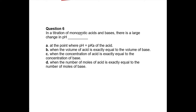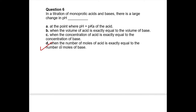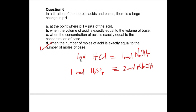You reach the equivalence point when you have molar equivalent amounts of acid and base. Because both are monoprotic, you need the moles to be the same. Concentrations being equal doesn't guarantee equal moles if volumes differ. The answer is D: the number of moles of acid equals the number of moles of base. Molar equivalence means the amounts that exactly neutralize each other — for example, one mole of H2SO4 is equivalent to two moles of NaOH.